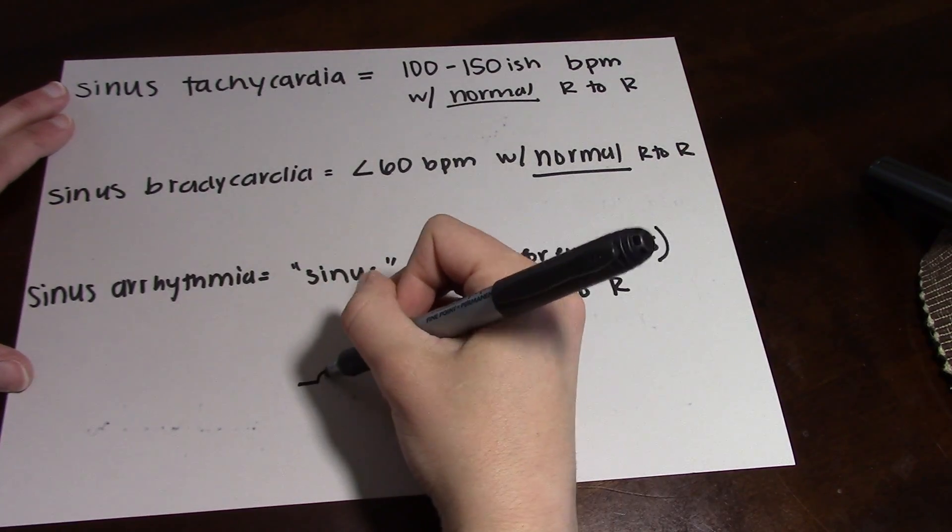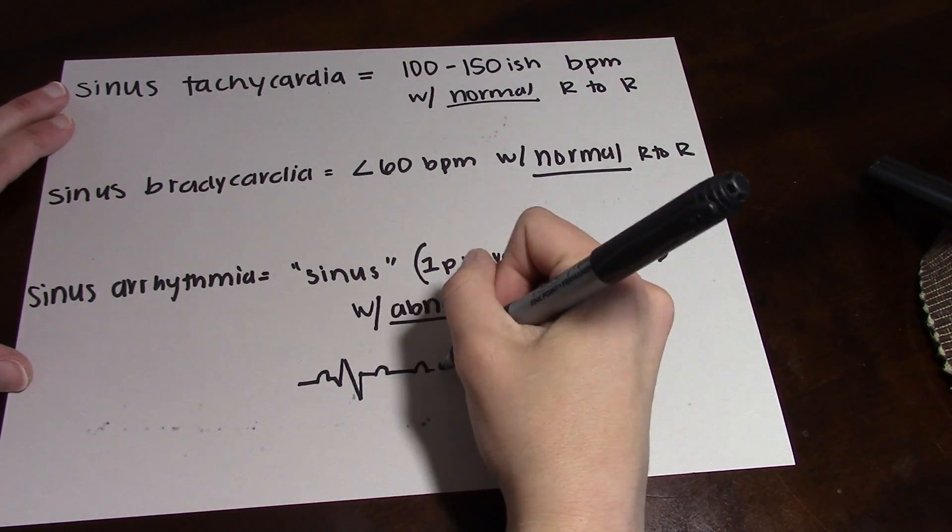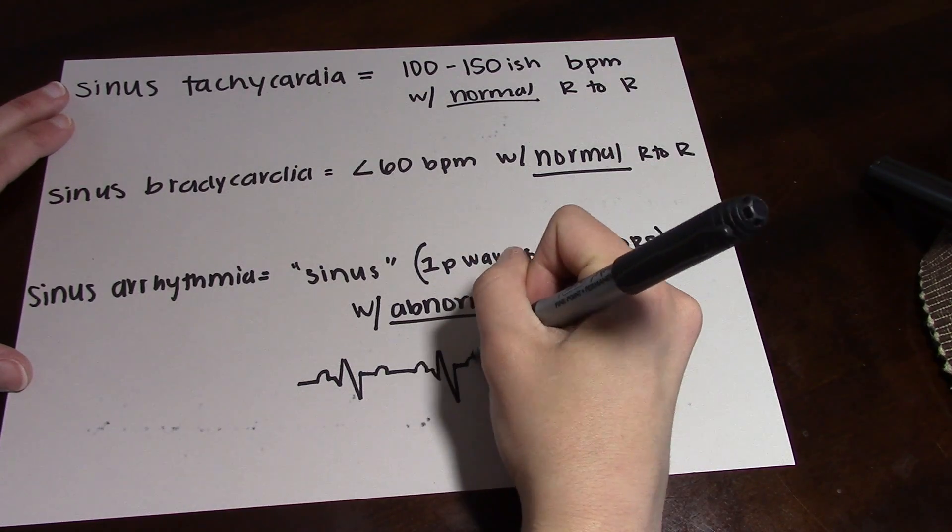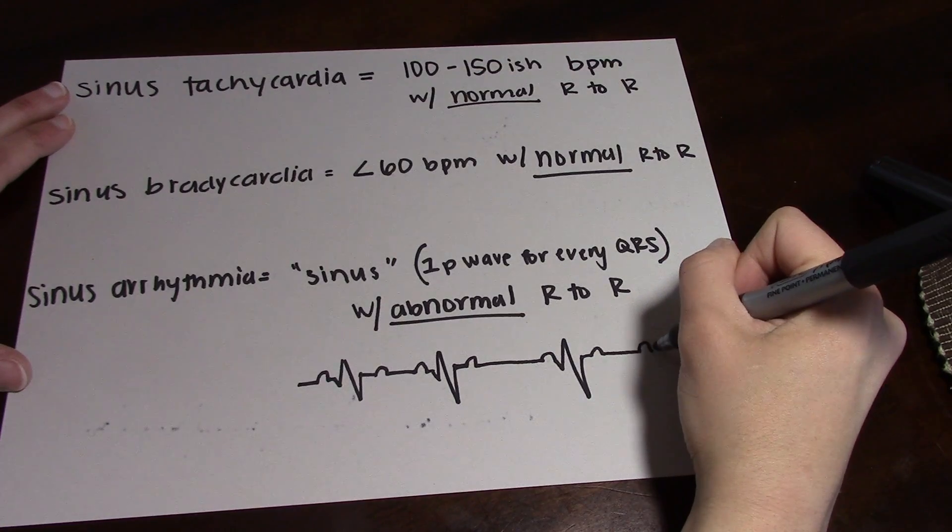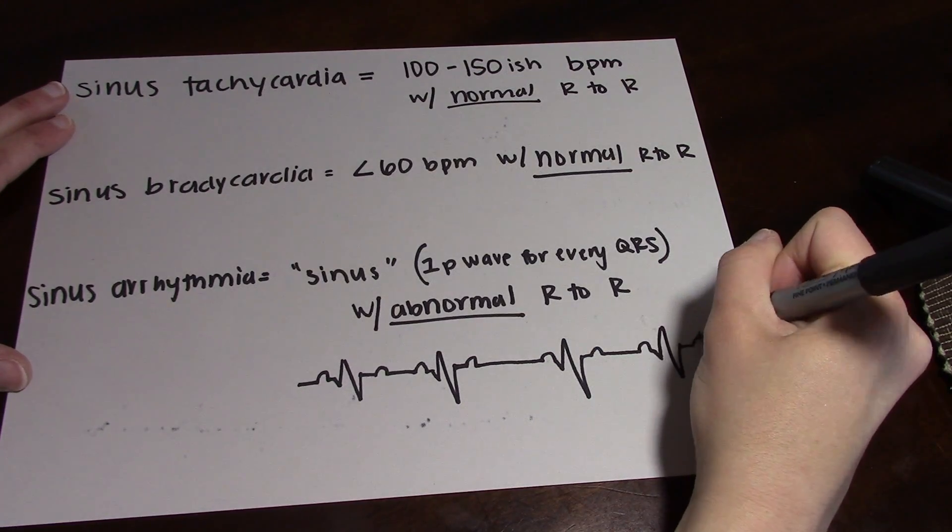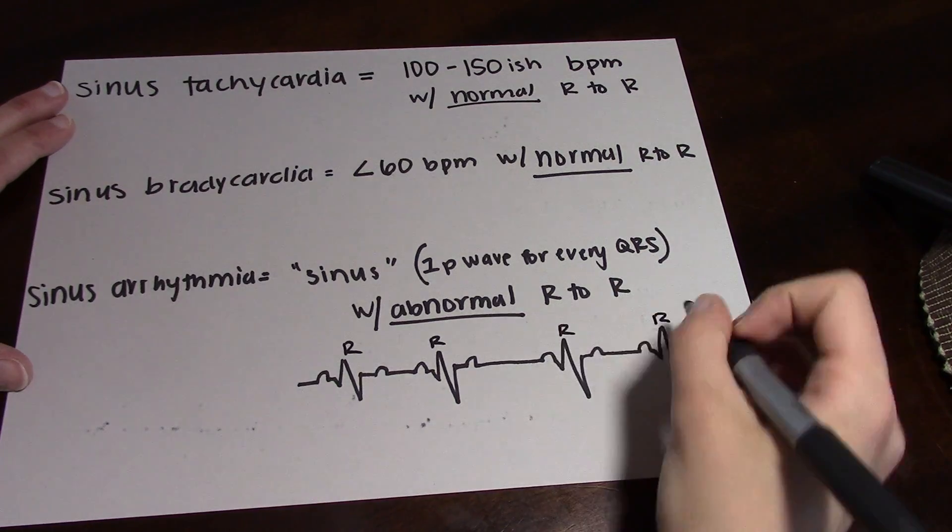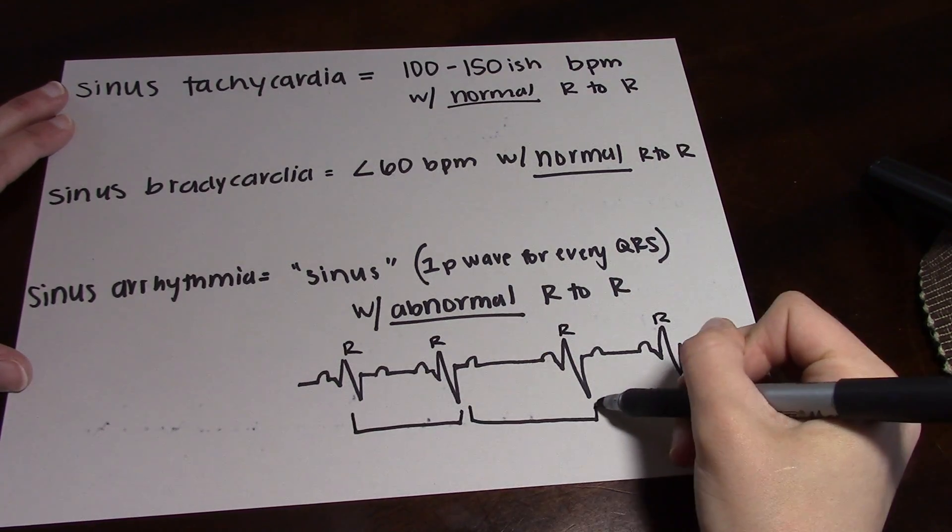And when you measure out your R to R, they will be off by two or more boxes. Those little tiny boxes - if you watch the EKG basic rhythm video, then you'll know what I'm talking about. But your R to R intervals are going to be abnormal, different and not even every single time.